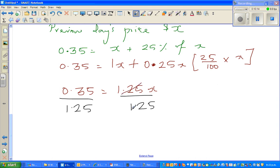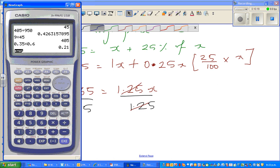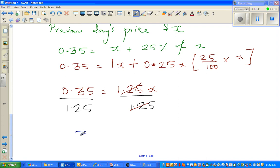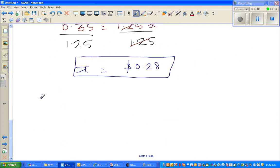This and this gets cancelled. So 0.35 divided by 1.25. You should always check whether the answer makes sense. So x is 0.28. Therefore, previous day's price is $0.28.